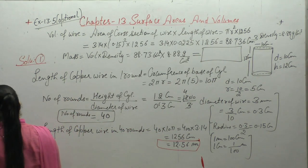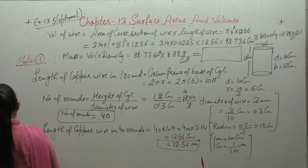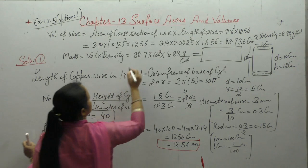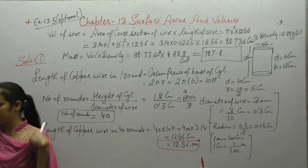We will multiply. On multiplying 88.736 by 8.88, we get 787.979 grams.